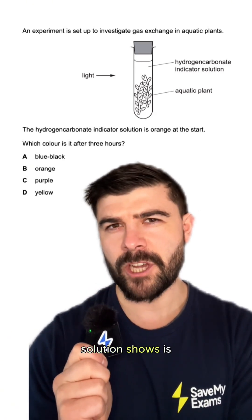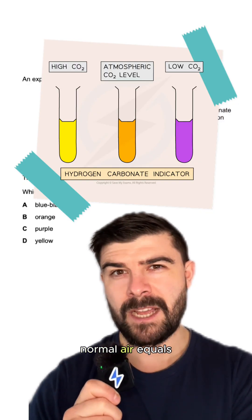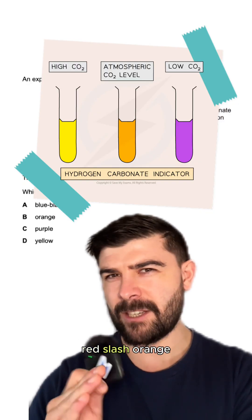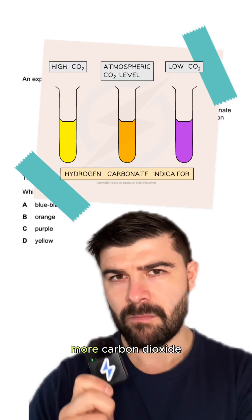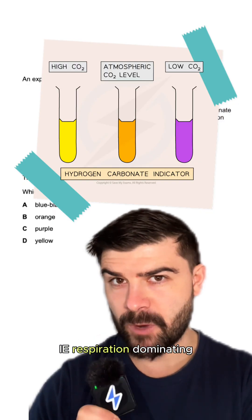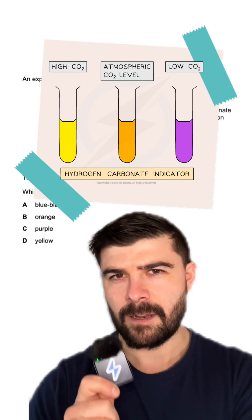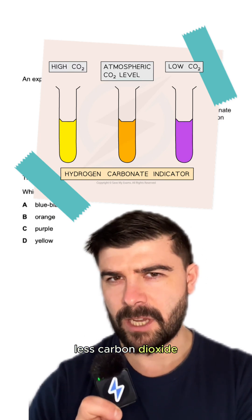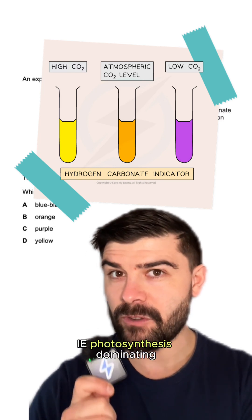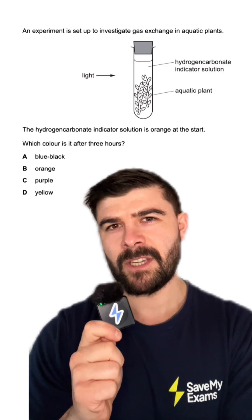The key thing this solution shows is carbon dioxide concentration. Normal air equals red/orange. More carbon dioxide, i.e. respiration dominating, equals yellow. Less carbon dioxide, i.e. photosynthesis dominating, equals purple.